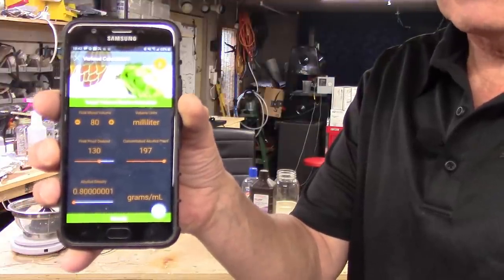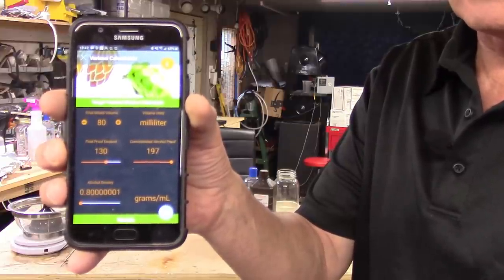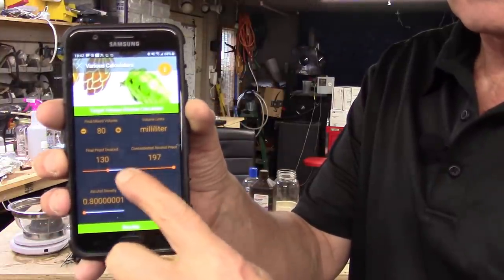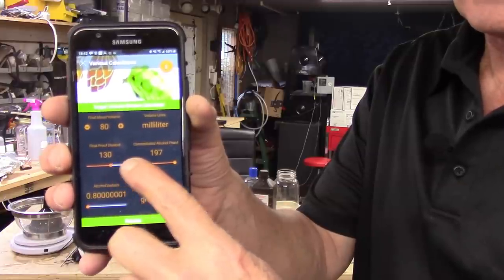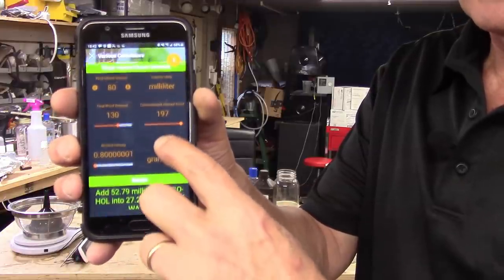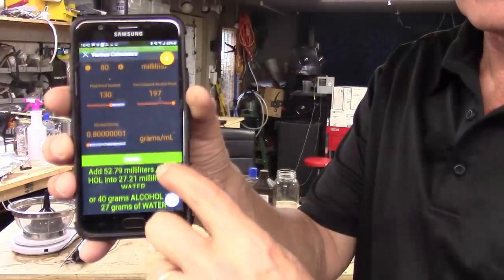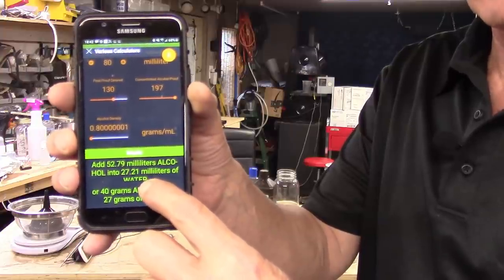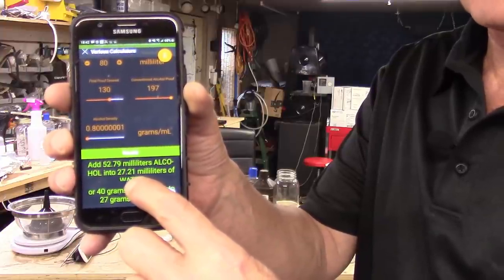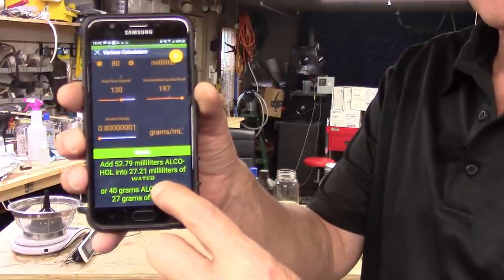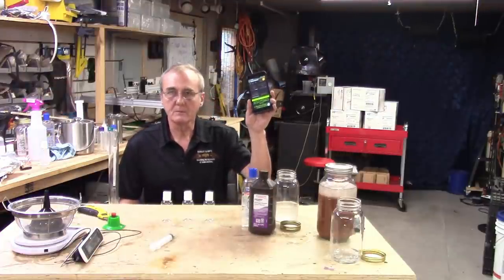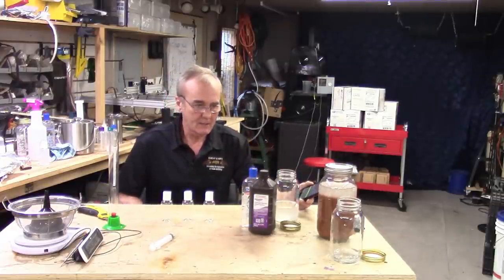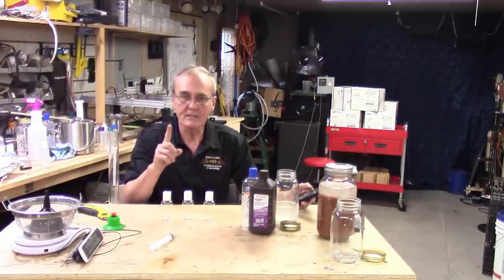This is the app I'm using. It's fairly intuitive. I've got 80 milliliters that I'm starting with. I'm using milliliters. I want 130 proof to be my final proof. I'm starting off with 197 proof. If you go down here, it'll tell you, here's what I need to do: I need to add 52.79 milliliters of alcohol into 27.21 milliliters of water or in this case, aloe vera. We're at that point. I just showed you a close-up. I'm going to use my app, and that tells me what my mixture is going to be. But before we get to that mixture, I just want to tell you real quickly, how do we regenerate that stuff?